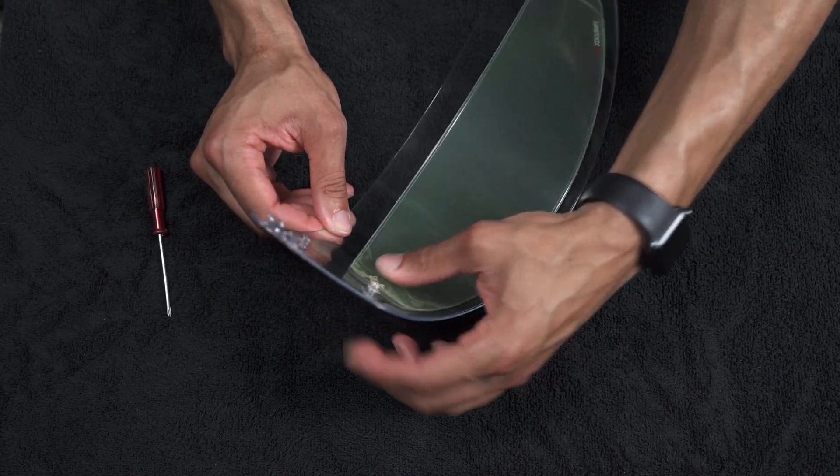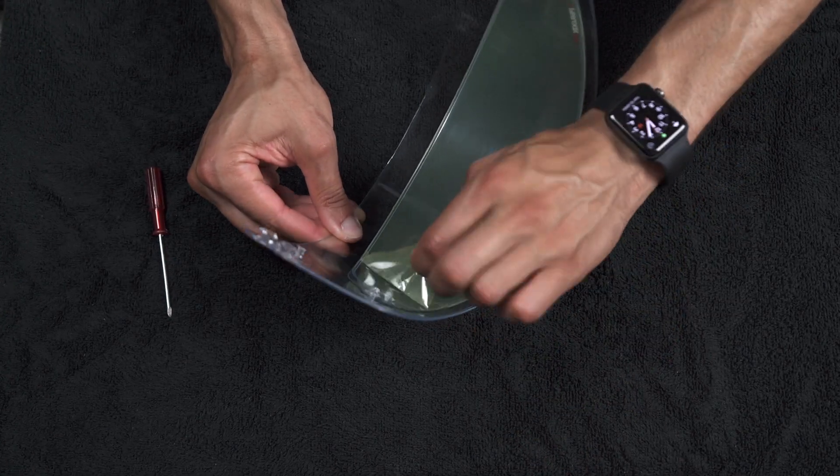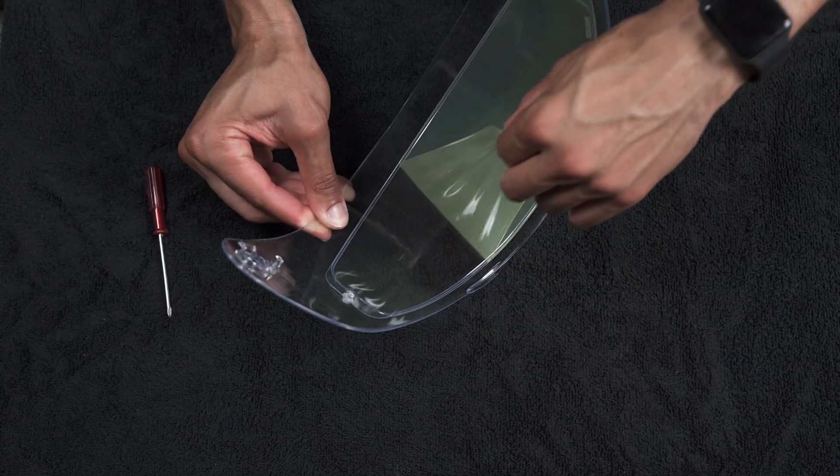Alright, and once you get all that done, go ahead and tighten that screw back up so it's not loose, so that tension is tight again. And then go ahead and remove this protective film that's on it.